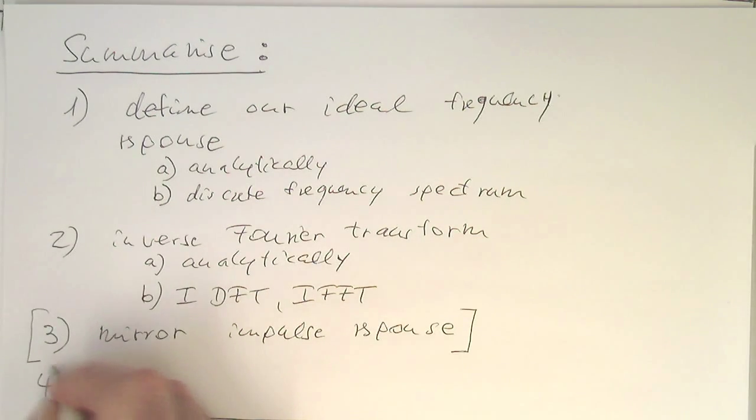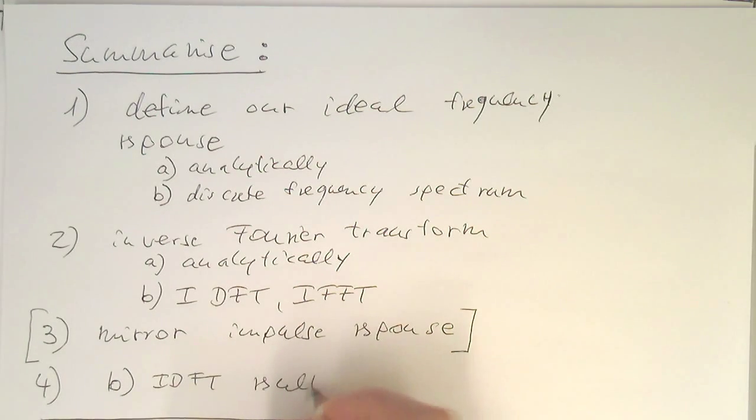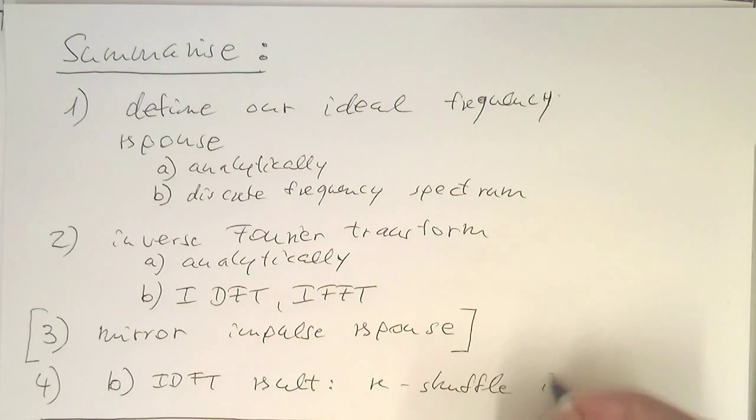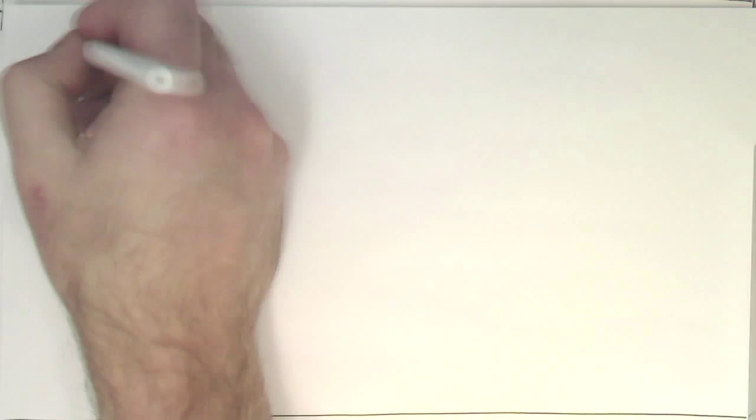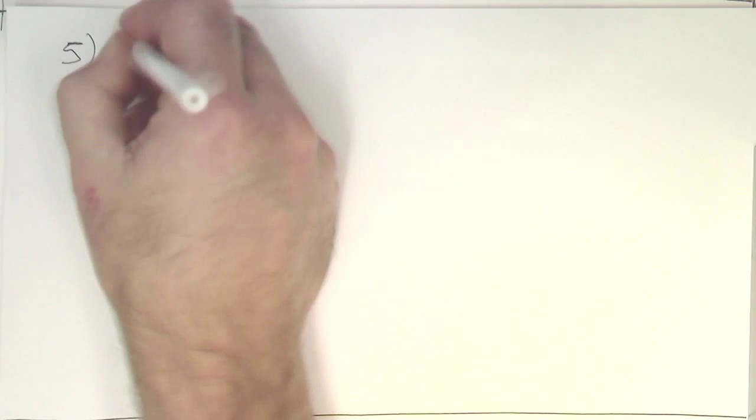So, then 4. So, in case we have our IDFT, the IDFT result. Re-shuffle impulse response. Remember, the order is wrong.